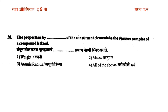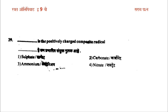The proportion by weight of the constituent elements in the various samples of a compound is fixed. Options are: first, weight proportion; second, mass; third, atomic radius. The answer is weight — the proportion by weight of constituent elements in a compound is always fixed.